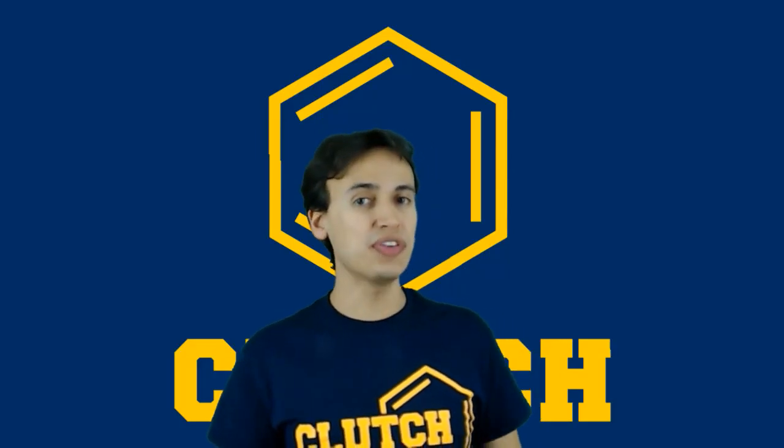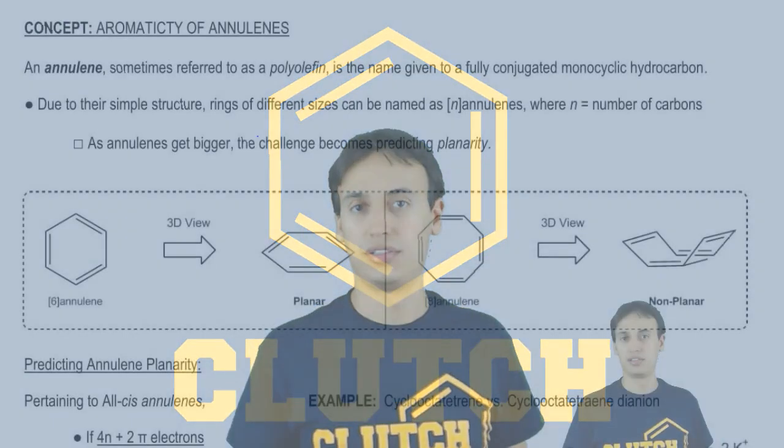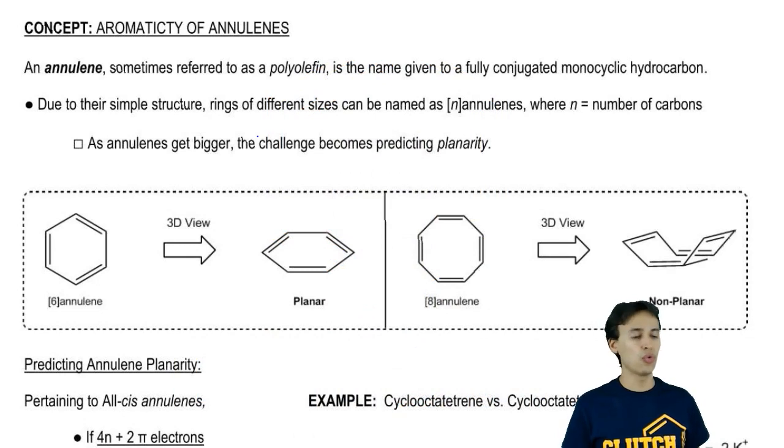Hey guys. Now we're going to focus on a specific type of ring called an annulene. Annulenes, sometimes referred to as polyolefins, are monocyclic hydrocarbons—one ring—that are fully conjugated. That means to be an annulene, you need to be only one ring and have alternating single bonds and double bonds like you would find in benzene.